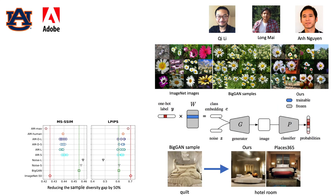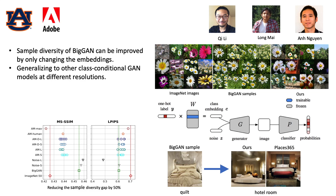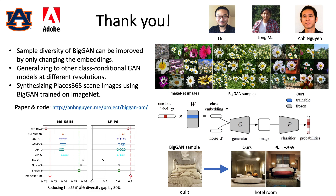In summary, our research showed that the sample diversity of BigGAN can be improved by only changing the embeddings. Our method generalizes to other models at different resolutions. Interestingly, we can synthesize Places365 scene images using a BigGAN pre-trained on ImageNet. Paper and code can be found on our website. Thank you for watching.